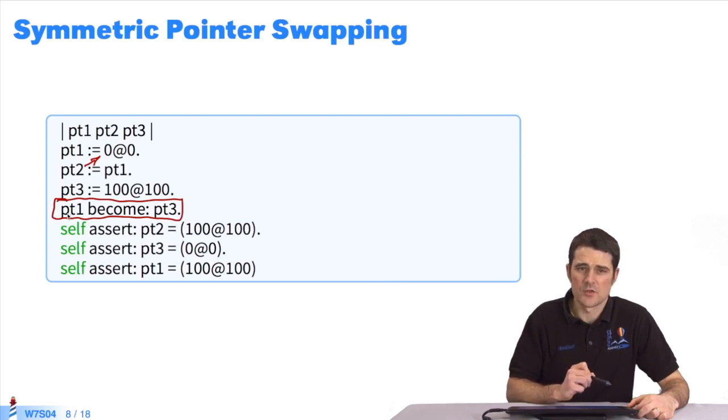Everything that pointed to the object denoted by the variable point 1, will now point to point 3. That is, all the pointers to point 1. We see that the variable point 2 pointed to the same object as point 1, and now it points to that which was referenced by point 3.